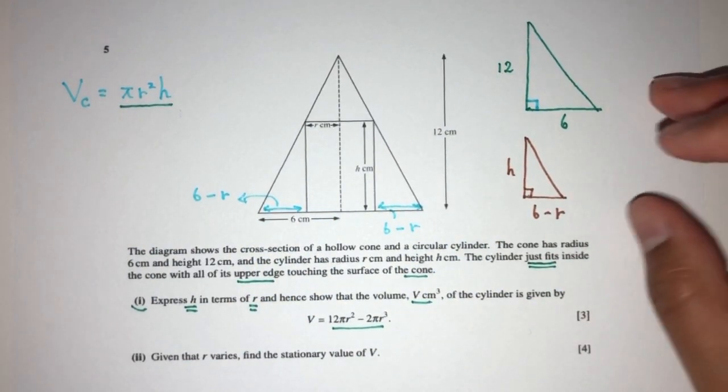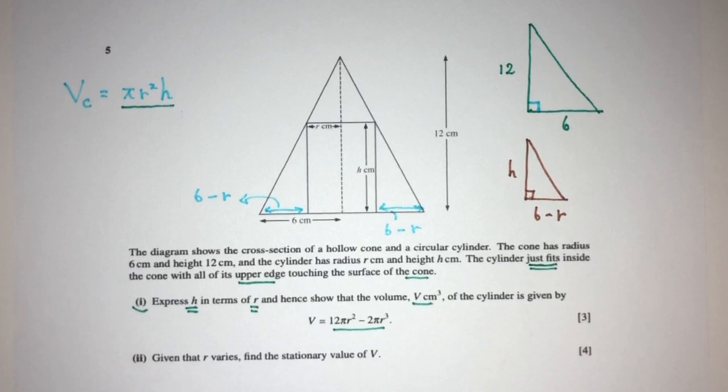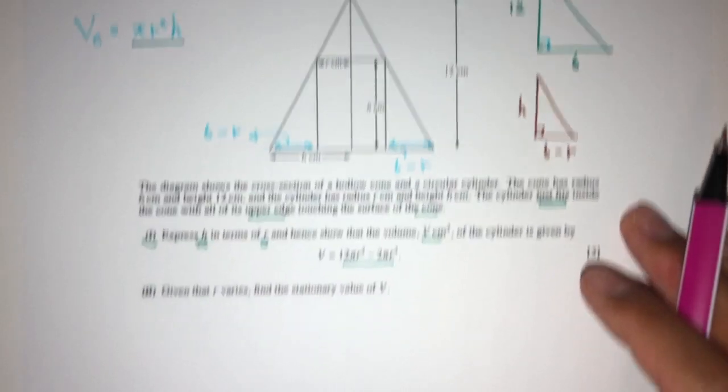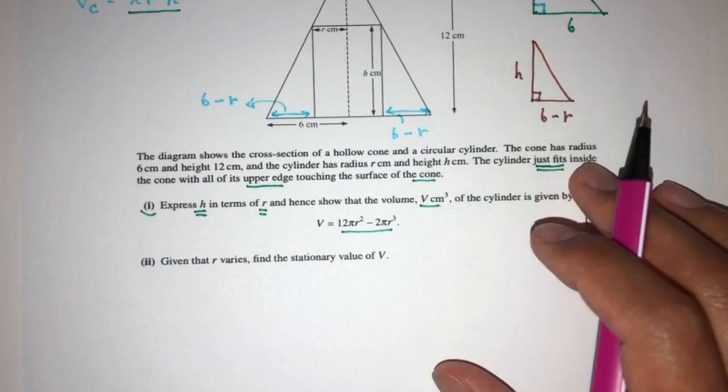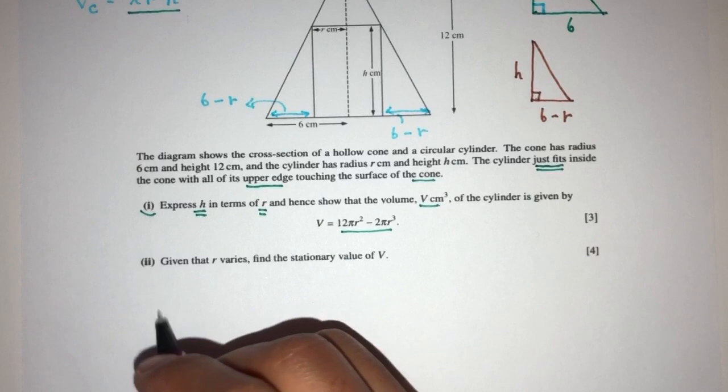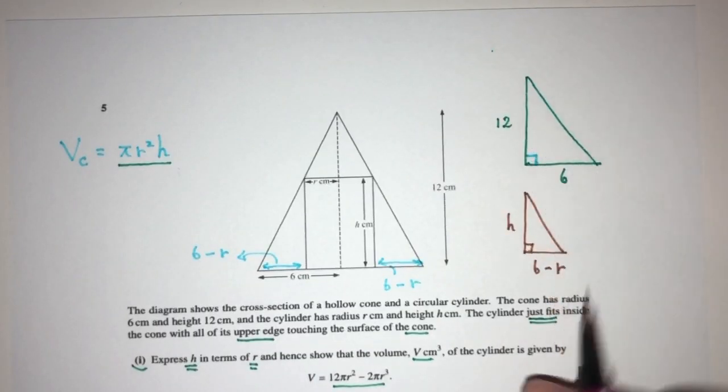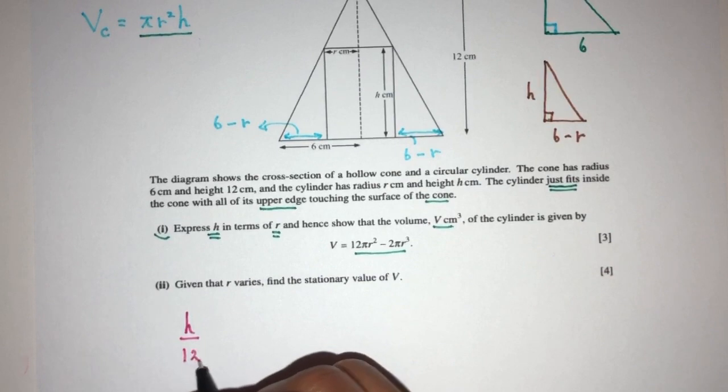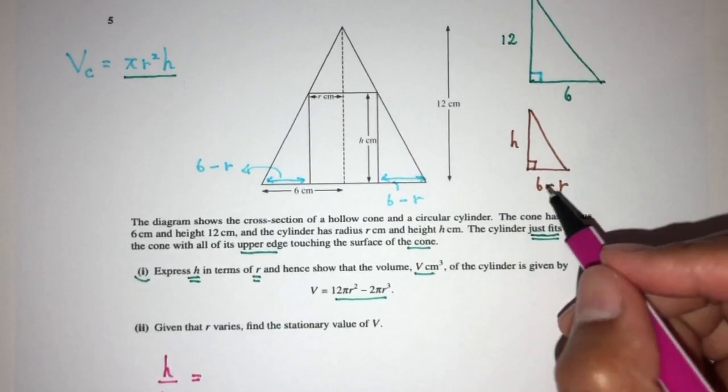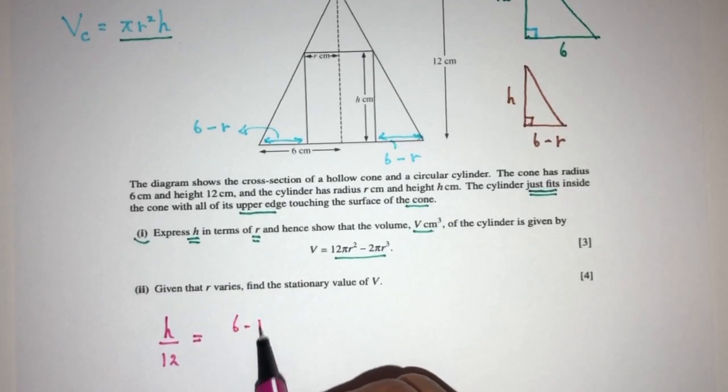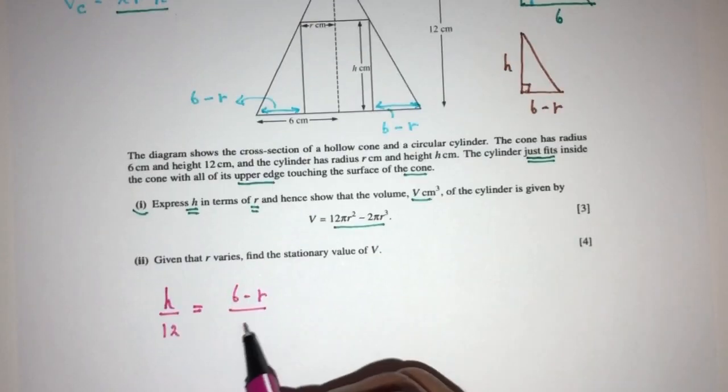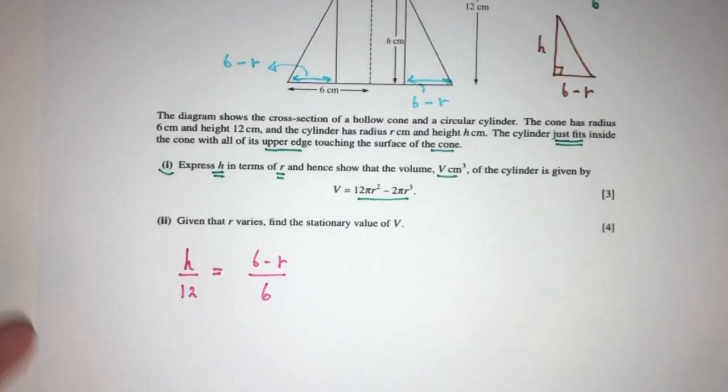What properties do we know about similar triangles? We know that their ratio of their corresponding sides are proportional to each other. So what does that mean? It means that if I take H, for example, H over the corresponding side will be over 12. It has to equal 6 minus R over the corresponding side, 6. So we can form this equation.